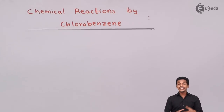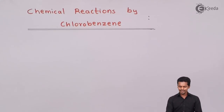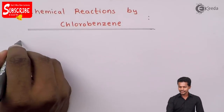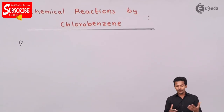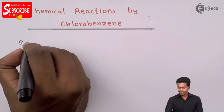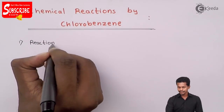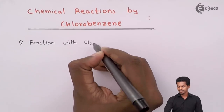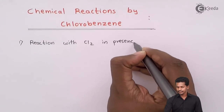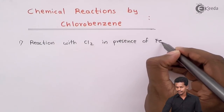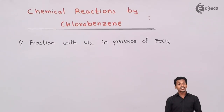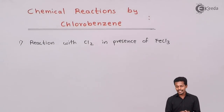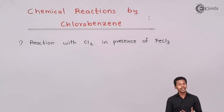We are going to talk about the different chemical reactions exhibited by chlorobenzene. The first one is the reaction with Cl2 in presence of FeCl3. So reaction of chlorobenzene with Cl2 in presence of FeCl3 — this is what we are going to talk about first.